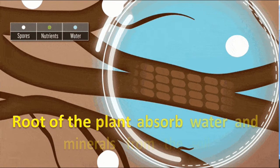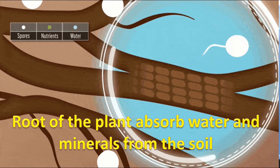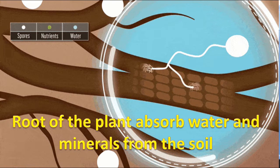Roots of the plant absorb water and minerals from the soil. It contains a special type of plastid called leucoplasts which help in absorption of water and minerals.